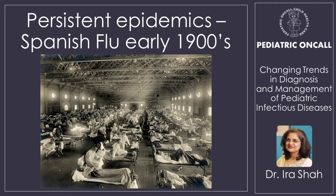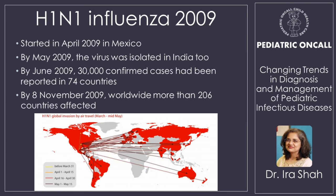Look at the Spanish flu in the early 1900s. We're talking about H1N1 today, but the Spanish flu was far worse. Flu is always there and comes in epidemics, but we've got drugs to treat it now. H1N1 really woke us up — it started in Mexico in April 2009, and by June it had spread to 74 countries. With air travel, we can spread epidemics faster. We no longer call it novel H1N1; it's now the regular endemic H1N1.